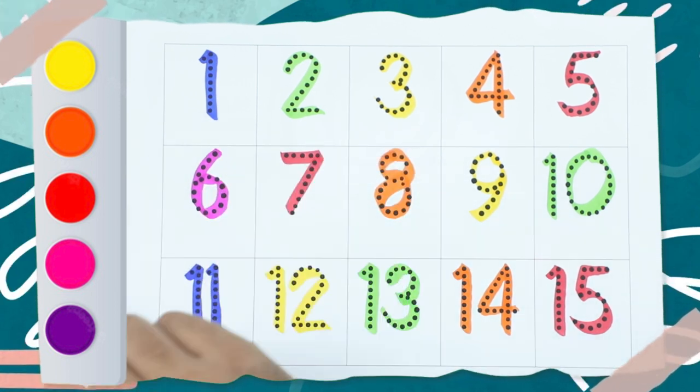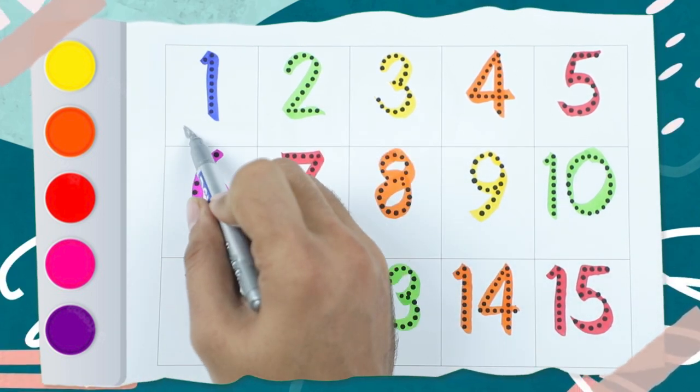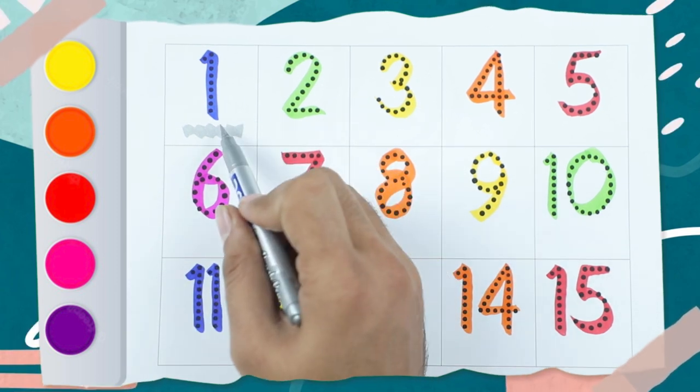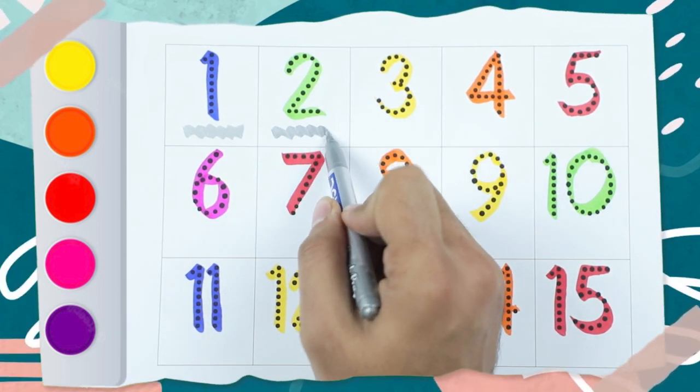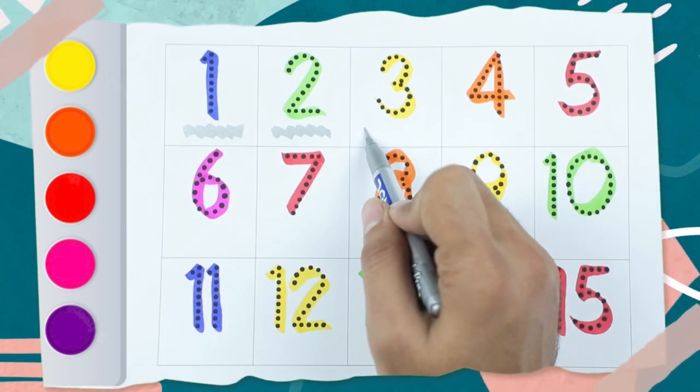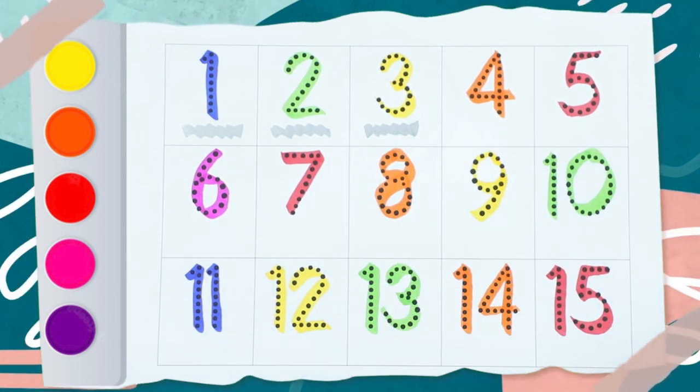Which number is this? 1, and the color is blue. Number 1 is blue color. Number 2 is green color, number 3 is yellow color.